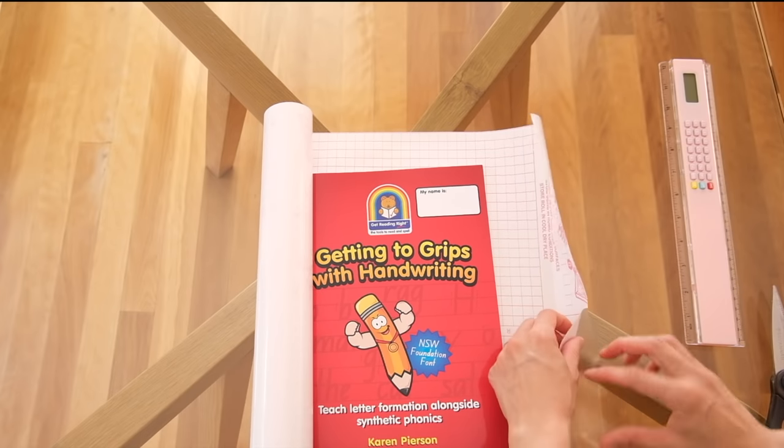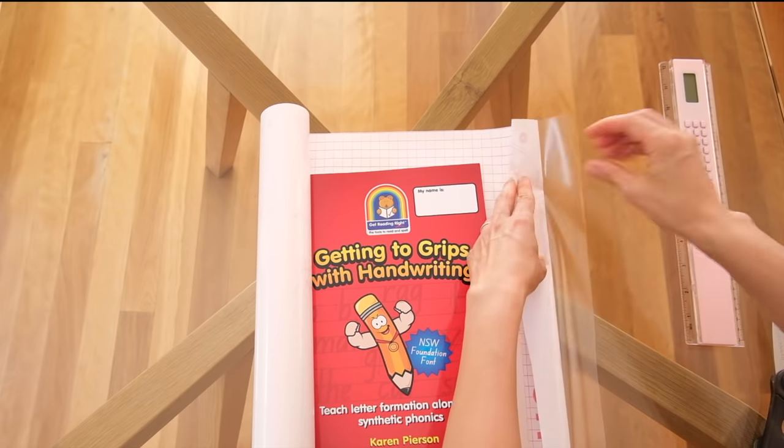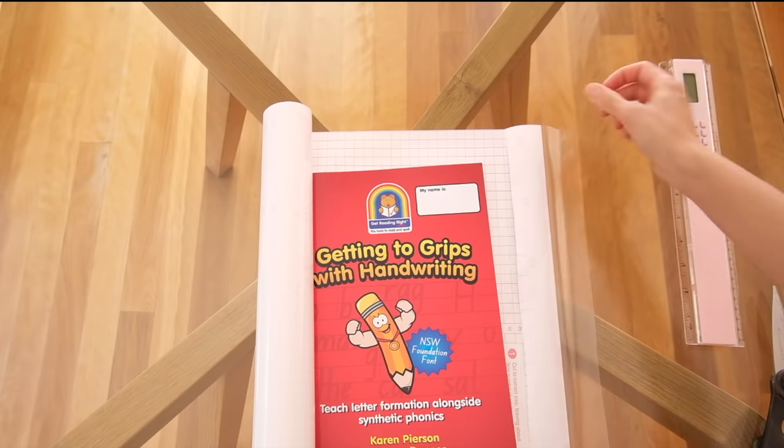You then want to peel the contact paper up to the crease line and press that crease line down again firmly.